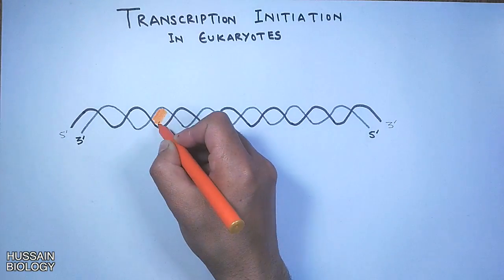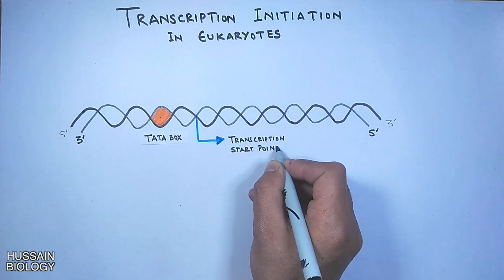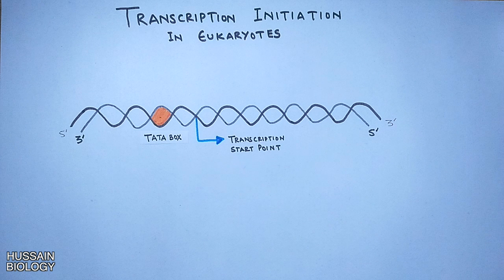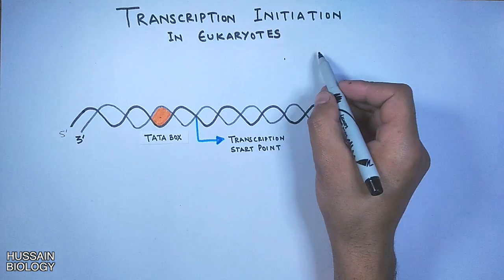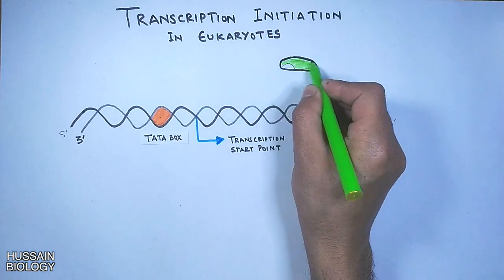Now let's get into transcription initiation. In this diagram we can see a DNA molecule having a TATA box and a transcription start point. There are several other consensus sequences on the DNA molecule, of which the TATA box is one of the most important sequences of the promoter. Other sequences are shown in the diagram displayed here. You can watch the complete video on eukaryotic promoters linked in the description. Going forward, we see transcription factor 2D is first in the run.